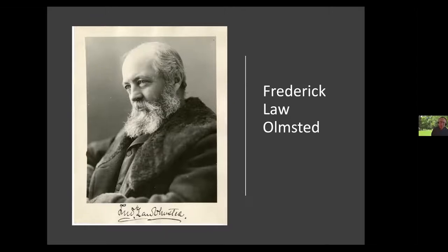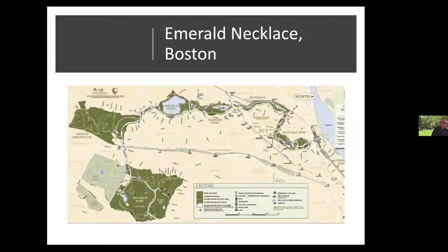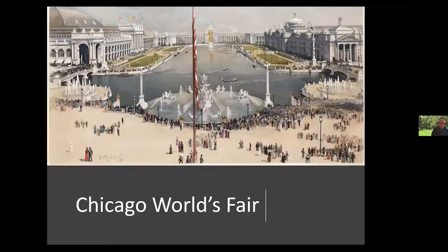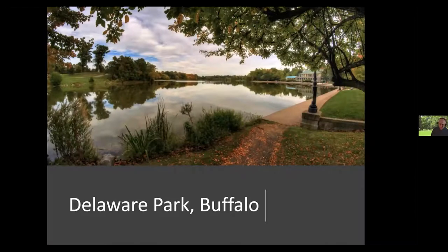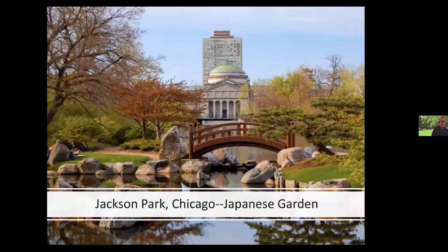That mischievous boy turned vagabond certainly eventually made something of his life. Central Park. Brooklyn's Prospect Park. Boston's Emerald Necklace. The White City of the Chicago World's Fair. The park systems of Buffalo — here's Delaware Park in Buffalo. Louisville — here's Cherokee Park. Legacy Parks in Chicago. Here's the Japanese Garden in Jackson Park in Chicago. Belle Isle in Detroit.